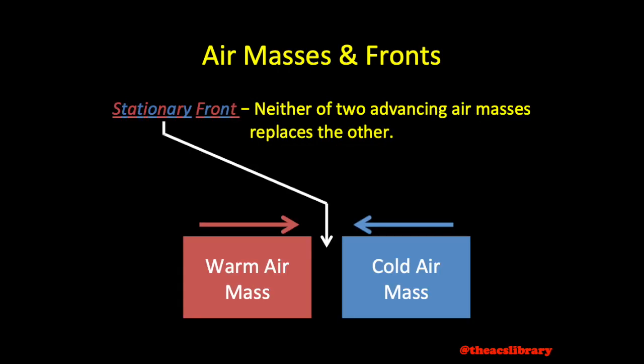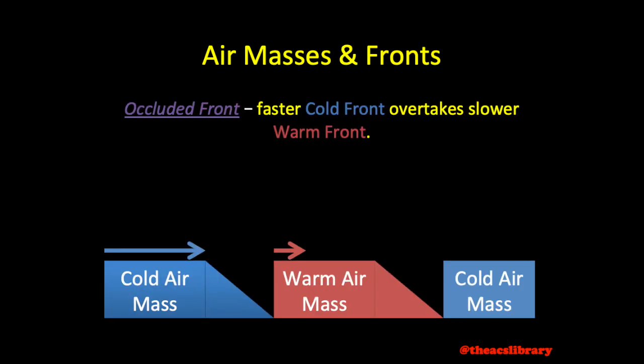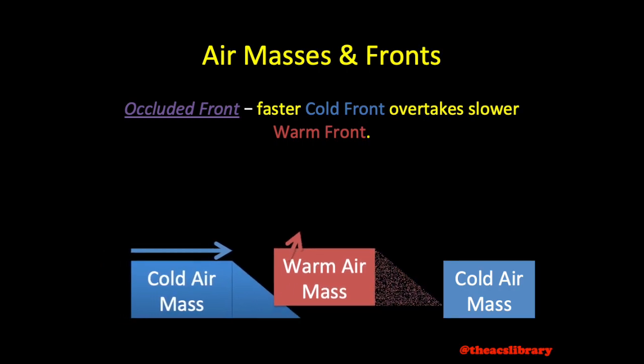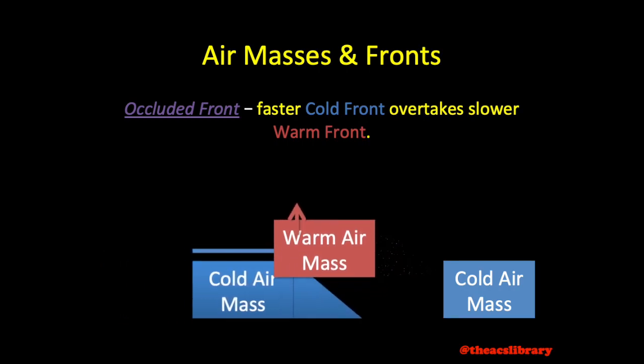Stationary fronts are formed when neither of two approaching air masses is replacing the other, and the frontal surface shows little or no movement. Occluded fronts are formed as a faster moving cold front overtakes a slower moving warm front. The cold front pushes the warm air up rapidly as it is squeezed between the cold front and the cooler air mass ahead.